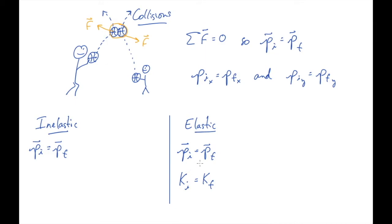Now, because in this kind of collision you have to conserve these two things simultaneously — this vector quantity and this scalar quantity — these problems tend to be a little more complicated and difficult than the other kind. So what I'm going to do here is focus mainly on inelastic collisions, and the elastic ones we'll talk about later, after we do some examples and get familiar with the inelastic case.